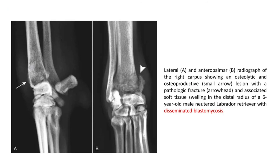This is a lateral and anteroposterior radiograph of the right carpus showing osteolytic and osteoproductive lesions with pathologic fracture and associated soft tissue swelling in the distal radius of a Labrador Retriever with disseminated blastomycosis.